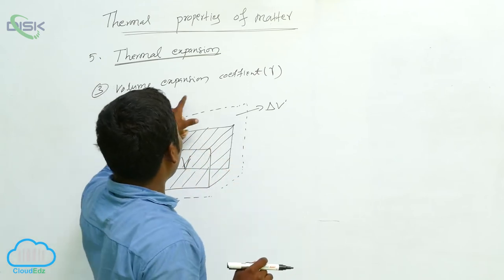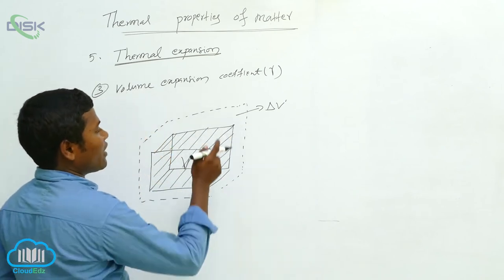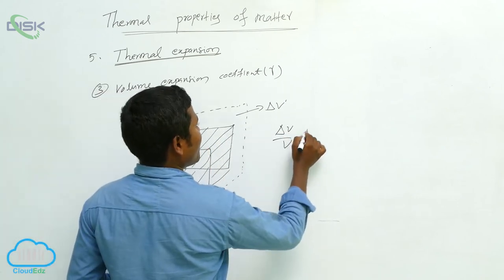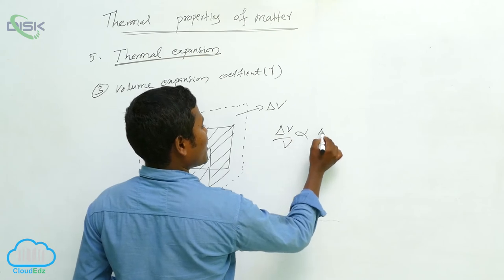Then we can say that is the volume expansion coefficient that we are denoting. How much may be there? Then delta V by V is directly proportional to delta T.